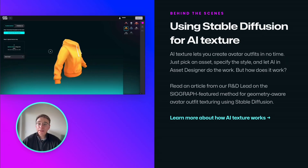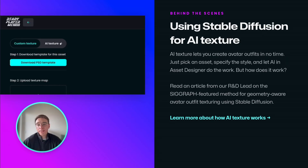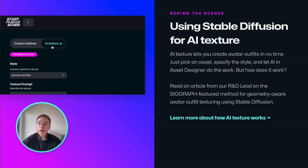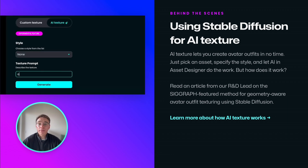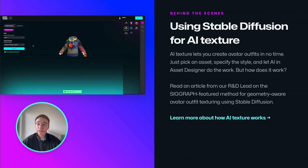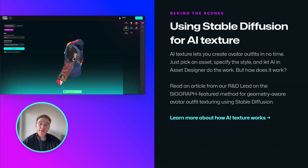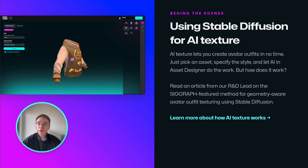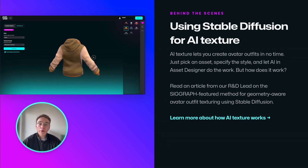Last year we introduced AI texture in Asa Designer, which lets you create avatar outfit textures in a matter of seconds. Our R&D team had an opportunity to present the solution for this feature during the Zgraph conference last December. You can read more about the work and findings on our blog.